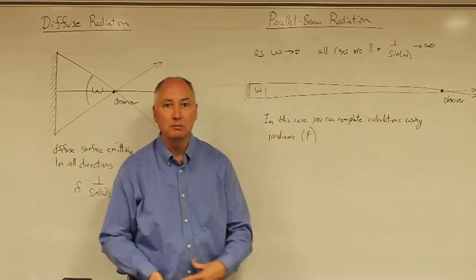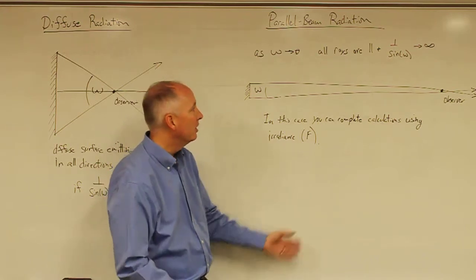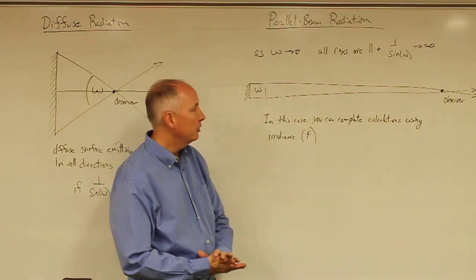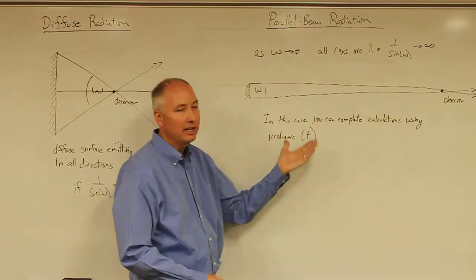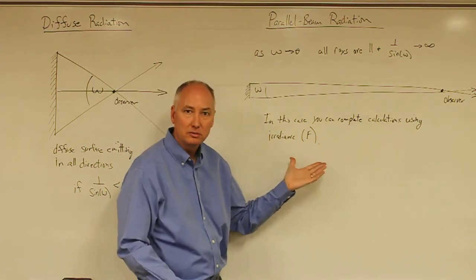On the other hand, if you're doing radiative equilibrium calculations for our planet and the emitter is the sun, then you can get away with simplifying it and doing your calculations in terms of irradiance.